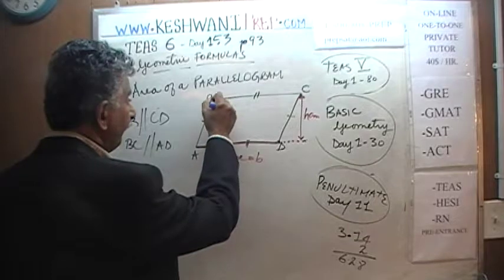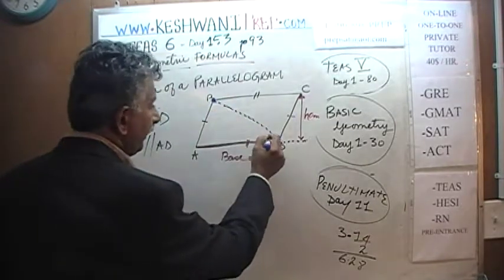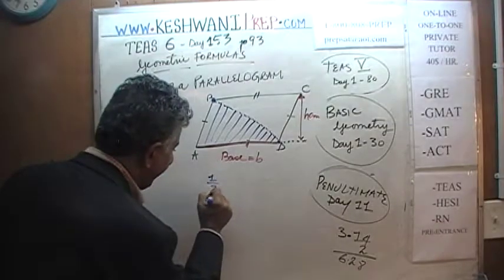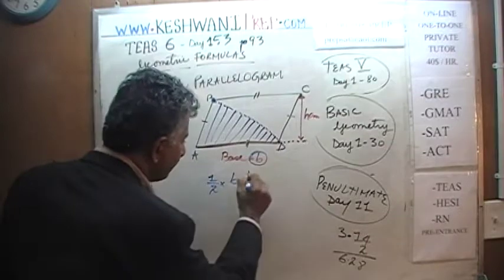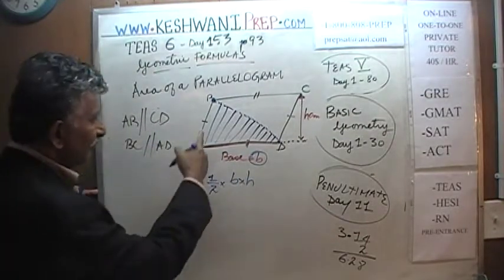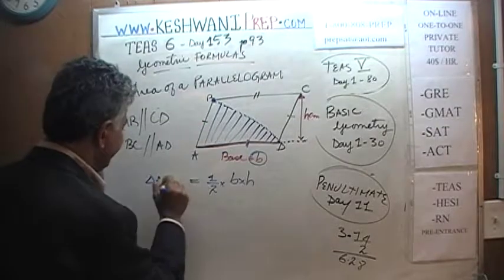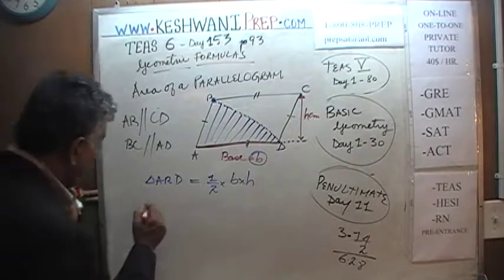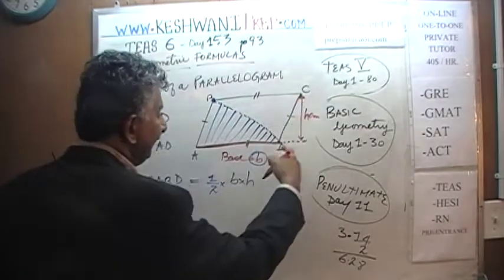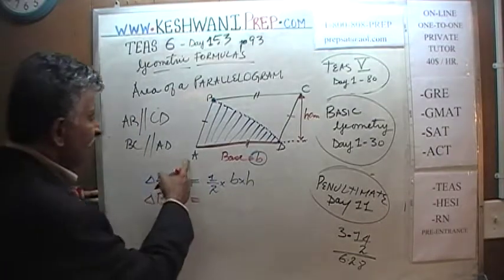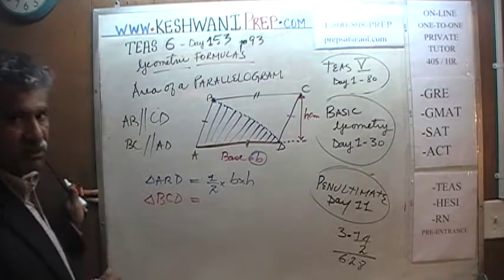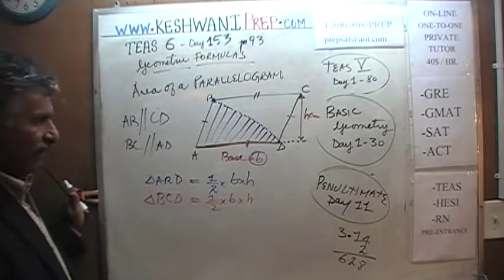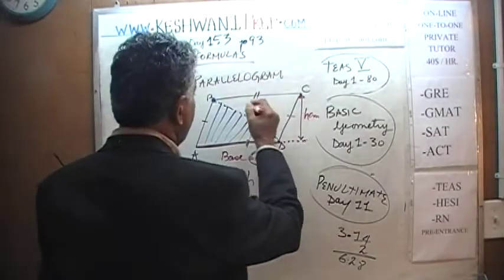Chop it up into two triangles. Let's figure out the area of this triangle first. The area of a triangle is one-half base times height, which is ½ × B × H. That's the area of triangle ABD. What about the other half? Because it's called the other half, it is the mirror image. The area of the other triangle BCD is the same as the area of ABD, because it's a symmetric figure — we just chopped it in half. The area of that triangle is also one-half base times height.